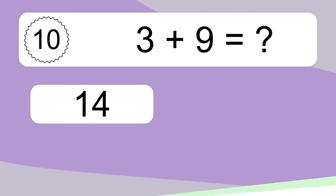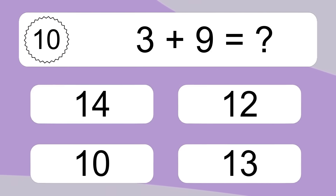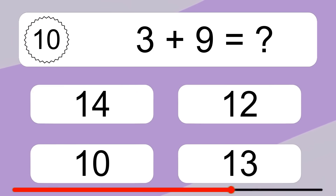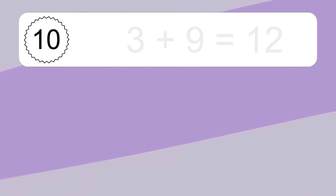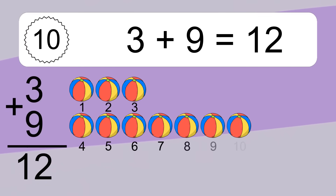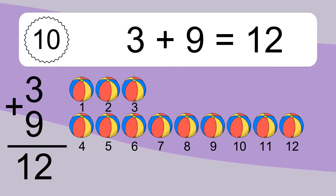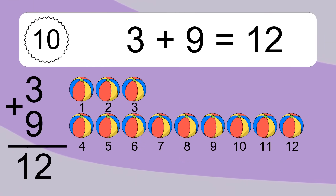3 plus 9 equals what? 3 plus 9 equals 12. Let's count it: 1, 2, 3, 4, 5, 6, 7, 8, 9, 10, 11, 12.